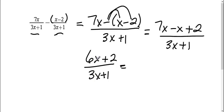I'm still not done because on the top, I can pull out a 2. So when I pull out that 2, I'm left with 3x plus 1. On the bottom, I have 3x plus 1. Therefore, I have 3x plus 1 on the top and bottom, so they cancel.